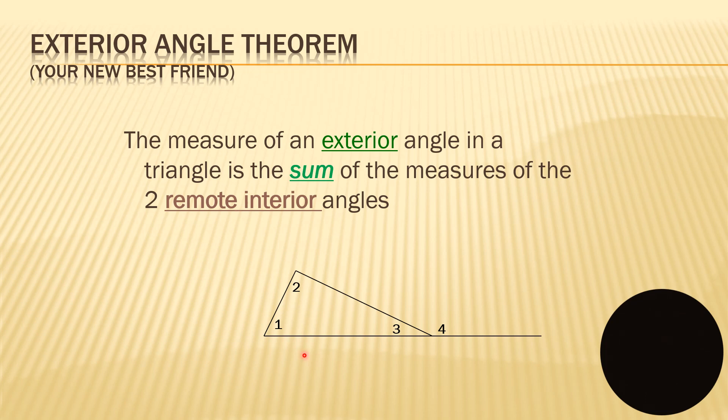So, your interior angle theorem, or your new best friend. The measure of an exterior angle in a triangle is the sum of the measures of two remote interior angles. So we have angle one, angle two, angle three, and angle four. So, angle four here is the exterior angle. And the two remote interior angles are angle one and angle two. Therefore, if we are going to get the measure,